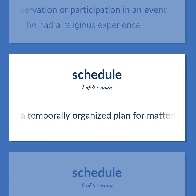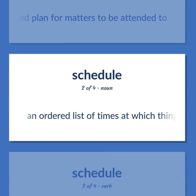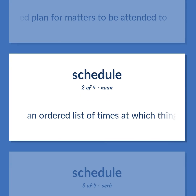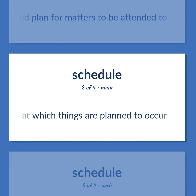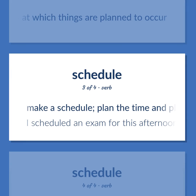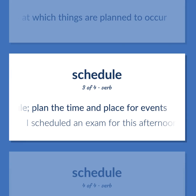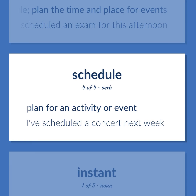SCHEDULE: A temporally organized plan for matters to be attended to. An ordered list of times at which things are planned to occur. Make a schedule; plan the time and place for events — I scheduled an exam for this afternoon. Plan for an activity or event — I've scheduled a concert next week.